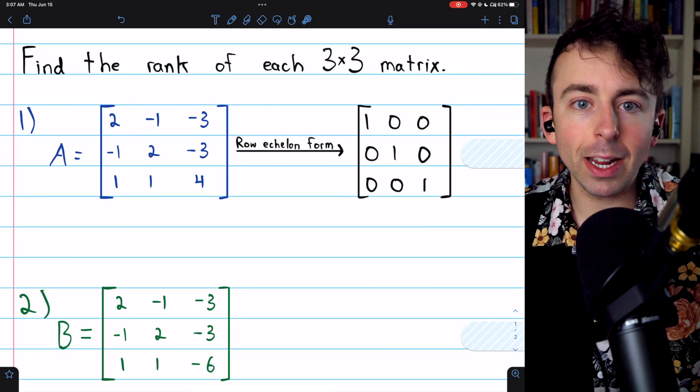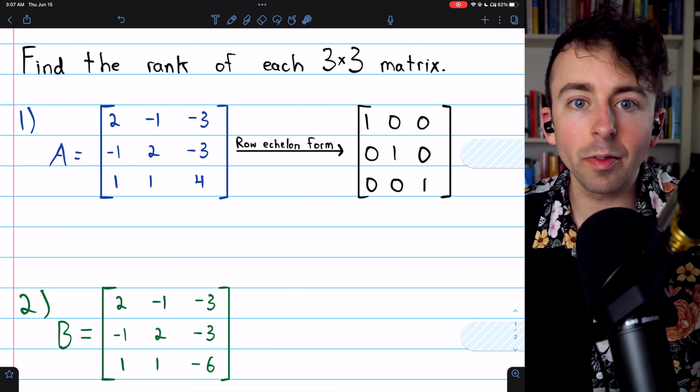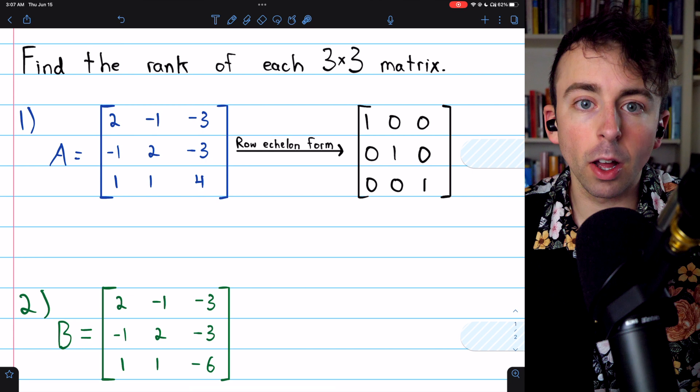Remember, the rank of a matrix is the dimension of its row space, which can be found by counting the number of non-zero rows in the matrix's row echelon form.